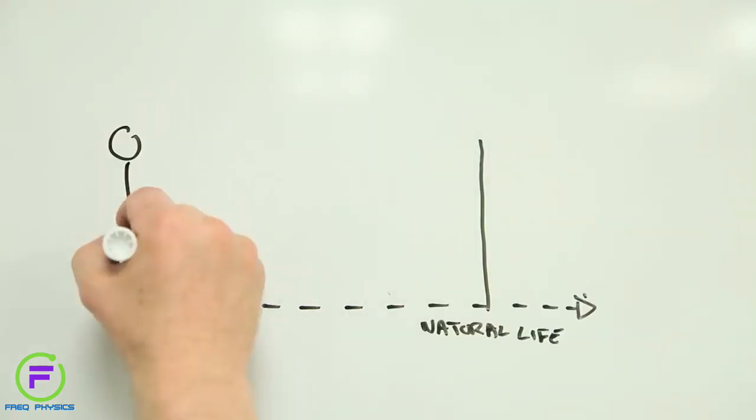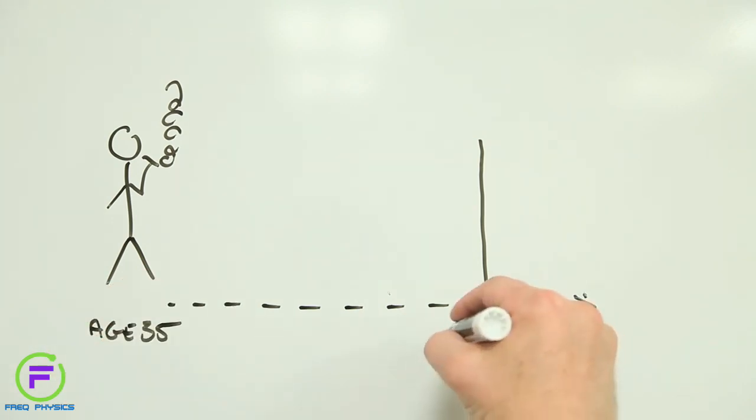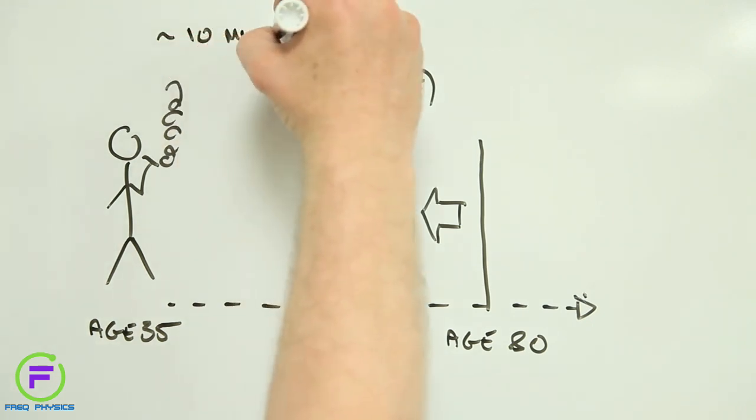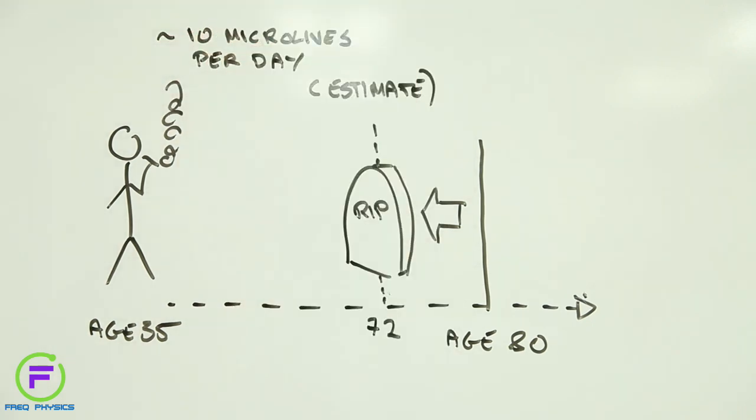That may not sound a lot, but racking up negative 10 Microlives a day, which you could be doing if you smoke 15-24 cigarettes per day for example, is like taking five hours off your life every 24 hours you live.